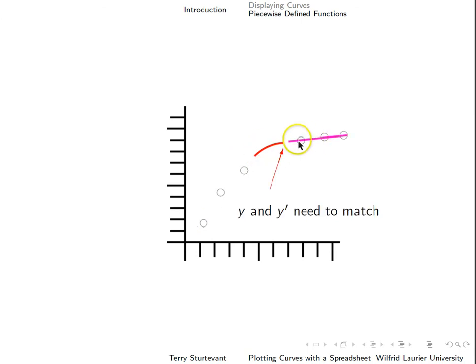On this case, at this point here, again, we want the y values of the curve and the line to match. We also want the slopes, again, to match so that it's a smooth transition.